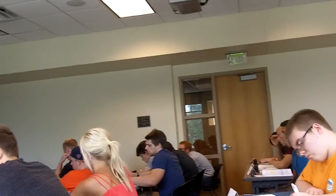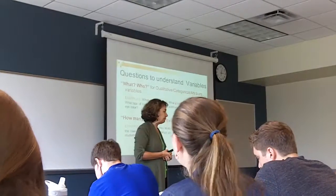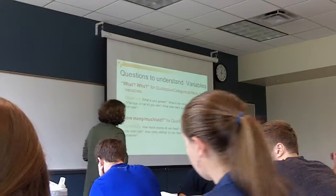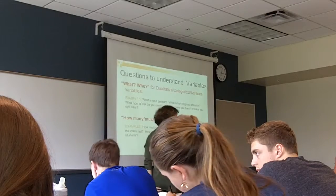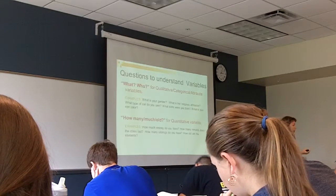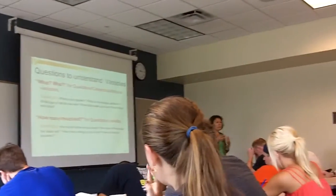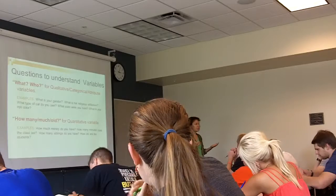So when we want to distinguish qualitative and quantitative data, we have questions that help us. For example, 'what or who?' — like 'what is your gender?' So gender is a qualitative variable, qualitative type of data. Religious affiliation is also qualitative. We cannot assign any numbers to religious affiliation. Political preferences, your hobby — that cannot be assigned to a number. Make sense? So this is qualitative.